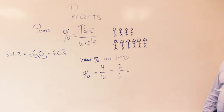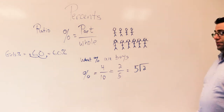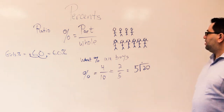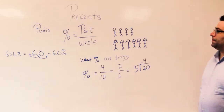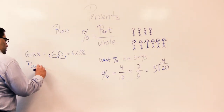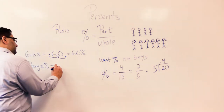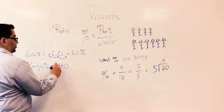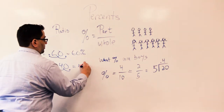Again, I have to use division. Five into two — five doesn't go into two. I add a decimal point, I add a zero. Five goes into twenty, four times. My answer was point four, which can be written as point four zero. Here's my decimal point — one, two — forty percent.